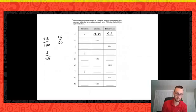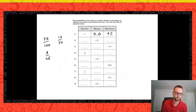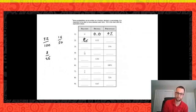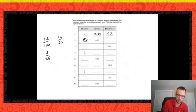Can we reduce 8 twenty-fifths any further? That's as small as we can reduce the fraction. And for our percentage, we said it was 32 out of 100. The word percent means 'for each 100,' so I have 32 for each 100 — that would be 32 percent.